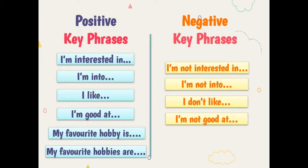The first one is by using the positive key phrases. You use these phrases to talk about hobbies and interests that you like. Here are some of the key phrases that you can say: I'm interested in, I'm into, I like, I'm good at. And you can also say 'my favorite hobby is' if you want to talk about only one hobby.